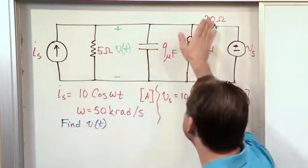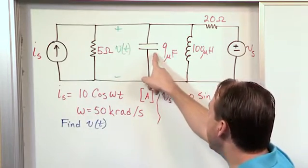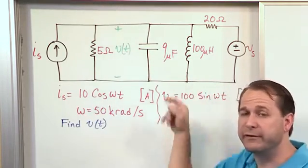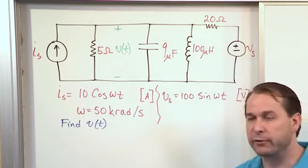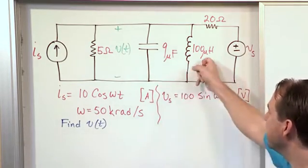We have the values here of everything. Now one thing to notice is that the capacitance is actually given to us in microfarads, so we don't have the impedance calculated in terms of J. We have the actual value of the capacitance and the value of the inductance.